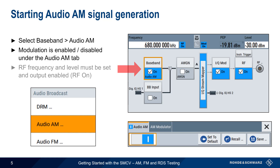Note that like all other signal generation tasks on the SMCV, both the RF output frequency and output level must be set, and the RF output block must also be turned on.